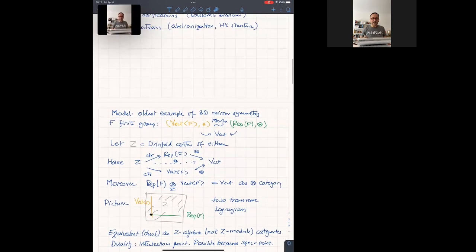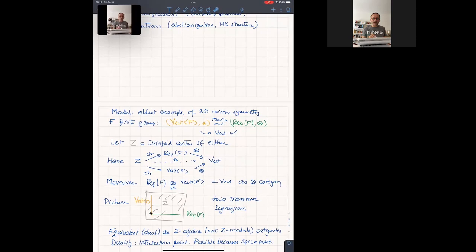All right. So let me start. Let's go into the model. I'm calling it the oldest example of three-dimensional mirror symmetry. It's gauge theory for a finite group F. It's a bit of a joke because, of course, A model and B model and everything is the same at this stage. So anything you might want to call mirror symmetry must happen in the same place. But nevertheless, something interesting does happen, which we can learn from, but you can't take it too seriously.